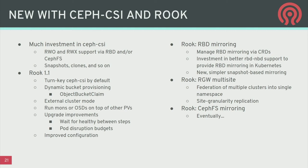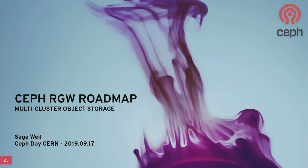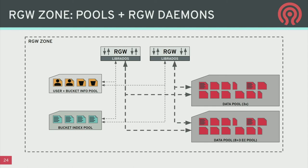For Octopus priorities in the Kubernetes space, the first is exposing RBD mirroring capabilities through Rook. We also want to map out how to do RGW multi-site through Kubernetes. File system mirroring will come later. On the community front, there's work on Samba and CephFS integration. Now I want to switch topics and give a preview of the RADOS Gateway roadmap — specifically the multi-site RGW story, which is actually the most interesting and exciting set of features we're planning.